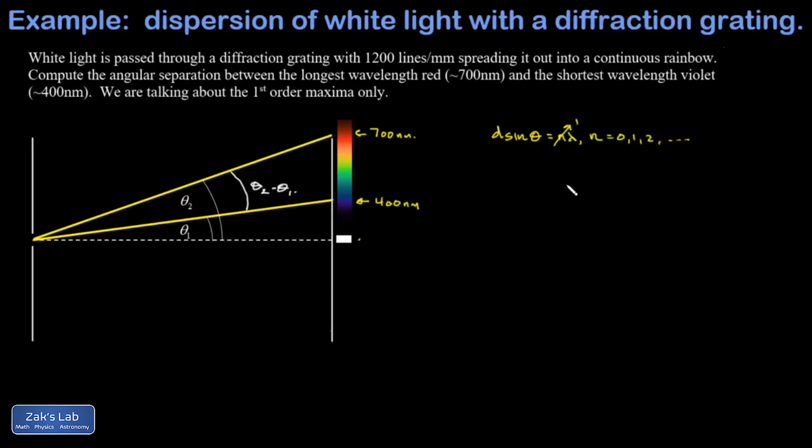Now that little d is the spacing between lines on the diffraction grating, and that takes a little bit of work to get done because the units we were given are lines per millimeter and what we want is meters per line. So I have one millimeter for every 1200 lines, putting it in the correct units - that's 0.001 meters